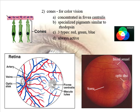A student notes that stargazers know about the rods being on the outside — if you're trying to see a faint star and you look next to it, you can see it better. That's exactly right. It turns out your cones are concentrated in an area called the fovea centralis, right in the center of your visual axis. That area has only cones, no rods. You have cones in the periphery as well, but they are highly concentrated in the fovea centralis.